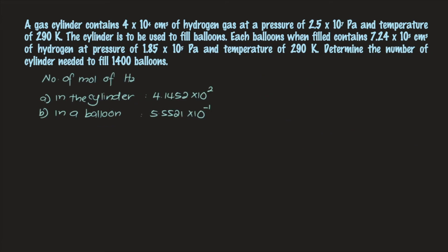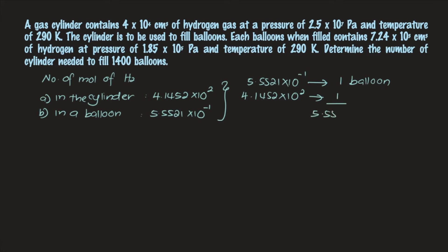From the previous calculations, we can predict how many cylinders of gas are needed to fill 1,400 balloons. In one balloon, you need 5.5521×10⁻¹ mol of gas, and in one cylinder you have 4.1452×10² mol. So the number of balloons fillable from one cylinder is 1 divided by 5.5521×10⁻¹ times 4.1452×10², which gives 746 balloons per cylinder.